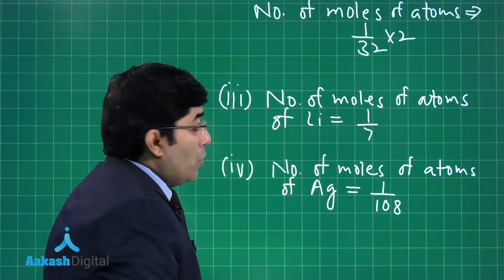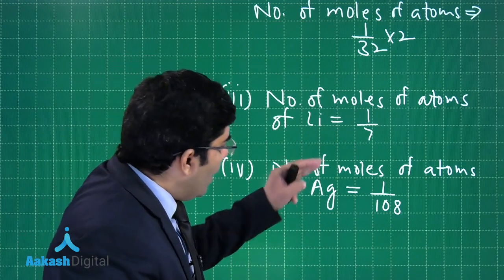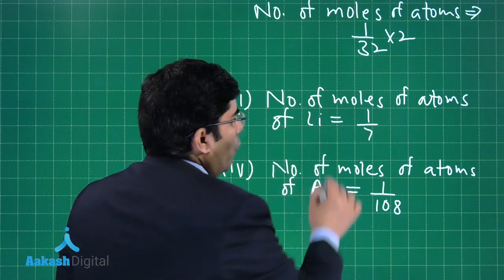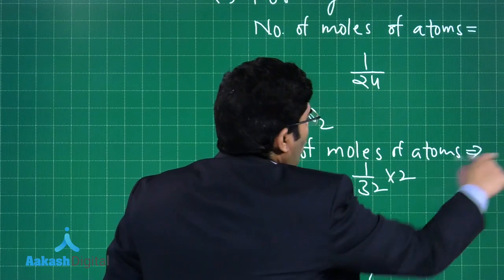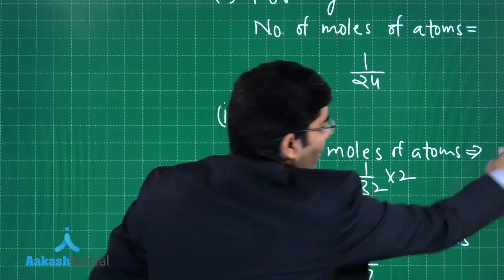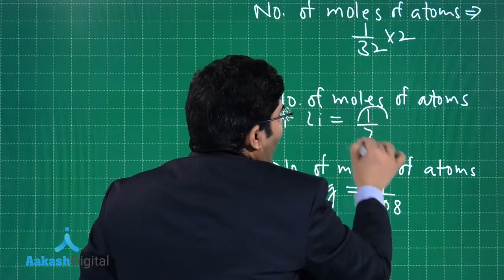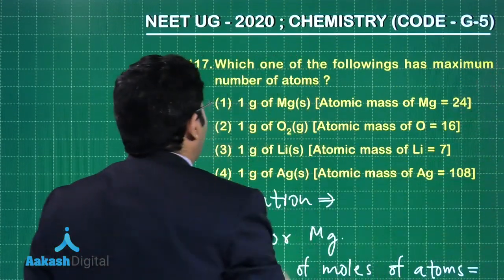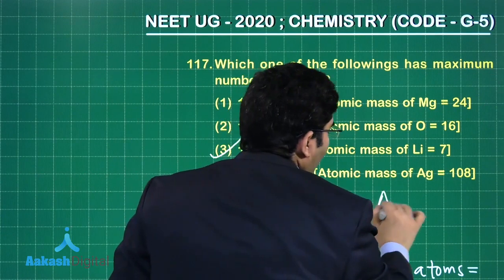So which one is the maximum? 1 upon 108, 1 upon 24, 1 by 7, or 2 upon 32? So we can see that this 1 by 7 is the maximum. That's why third will be the correct answer.